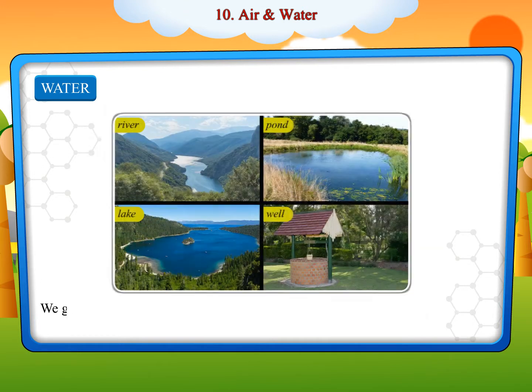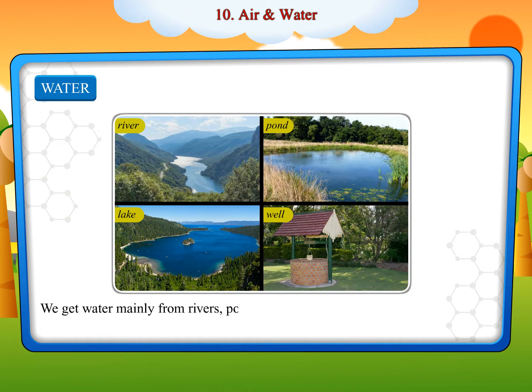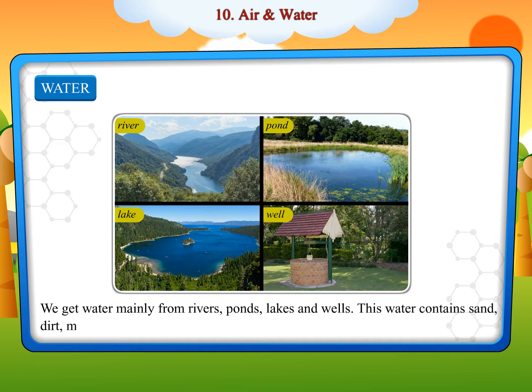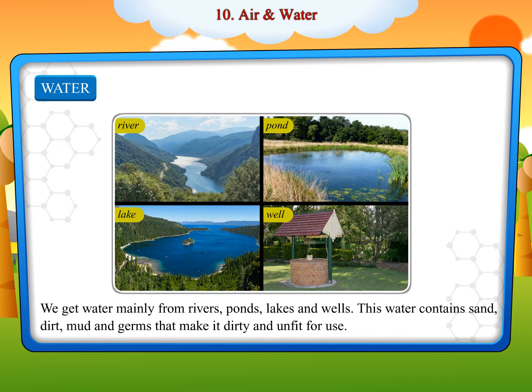We get water mainly from rivers, ponds, lakes and wells. This water contains sand, dirt, mud and germs that make it dirty and unfit for use.